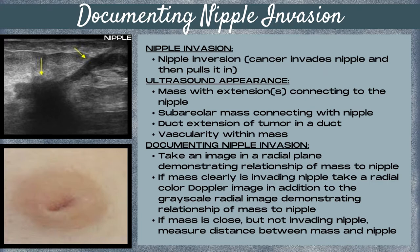The ultrasound appearance of this is either going to be a sub-areolar mass that's contiguous with a nipple where you can't distinguish the border between the mass and the nipple, or you're going to see a mass that has extensions connecting it to the nipple — spiculations like in this top image — or you're going to see a mass in a duct with a duct extension pattern, meaning that the branching portions of the mass within the duct are extending towards the nipple.